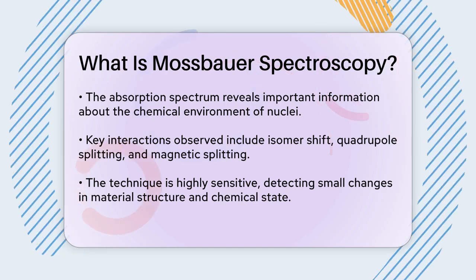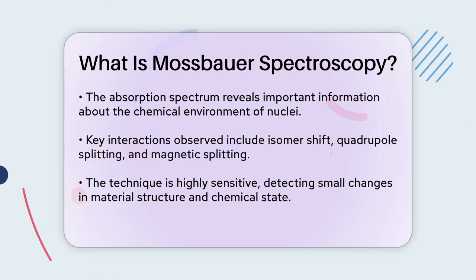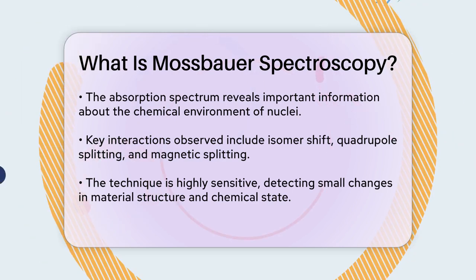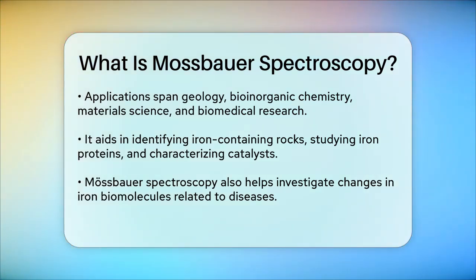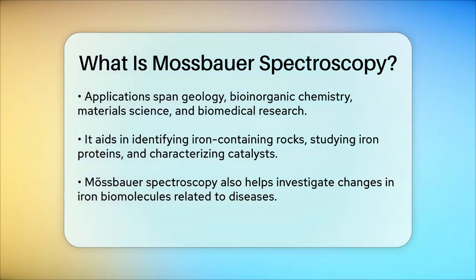Mössbauer spectroscopy has a wide range of applications. In geology, it helps identify the composition of iron-containing rocks, including meteorites and moon rocks. In bio- and organic chemistry, it's used to study iron-containing proteins and enzymes such as hemoglobin and ferritin. It's also valuable in materials science for characterizing catalysts and understanding phase transformations. In biomedical research, Mössbauer spectroscopy helps in studying the changes in iron-containing biomolecules related to diseases and the effects of environmental factors on these biomolecules.